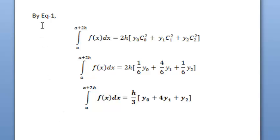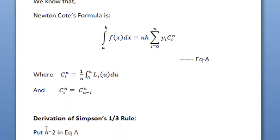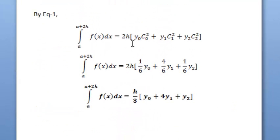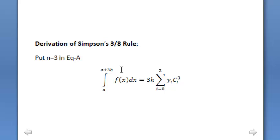Using equation 1 — the integral of f(x) dx equals 2h times the summation from i equals 0 to 2 of y_i c_i2 — and substituting the values c₀₂ equals 1/6, c₁₂ equals 4/6, and c₂₂ equals 1/6, we obtain the final result: the integral from a to a+2h of f(x) dx equals h/3 times (y₀ plus 4y₁ plus y₂). This is Simpson's one-third rule.